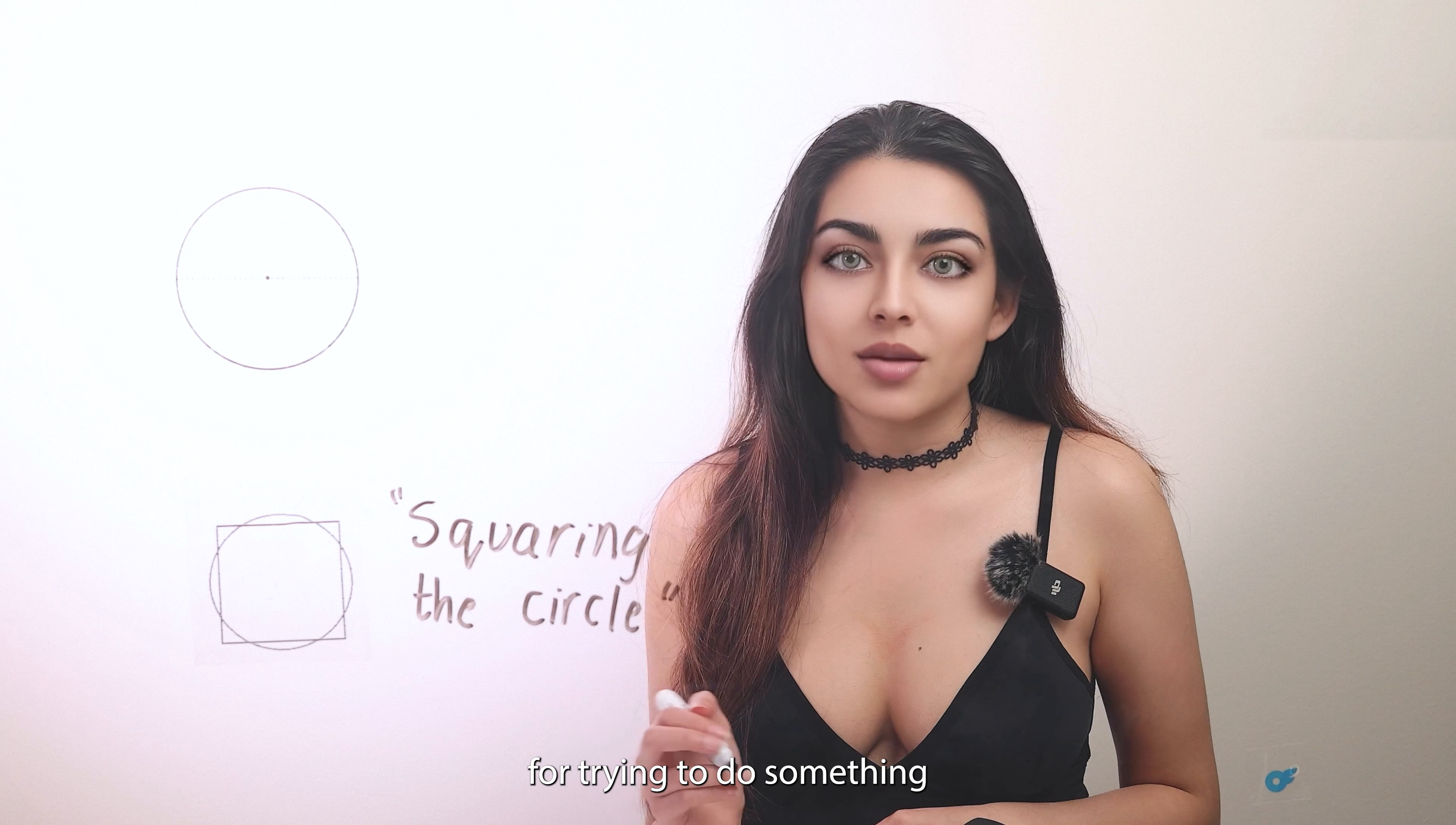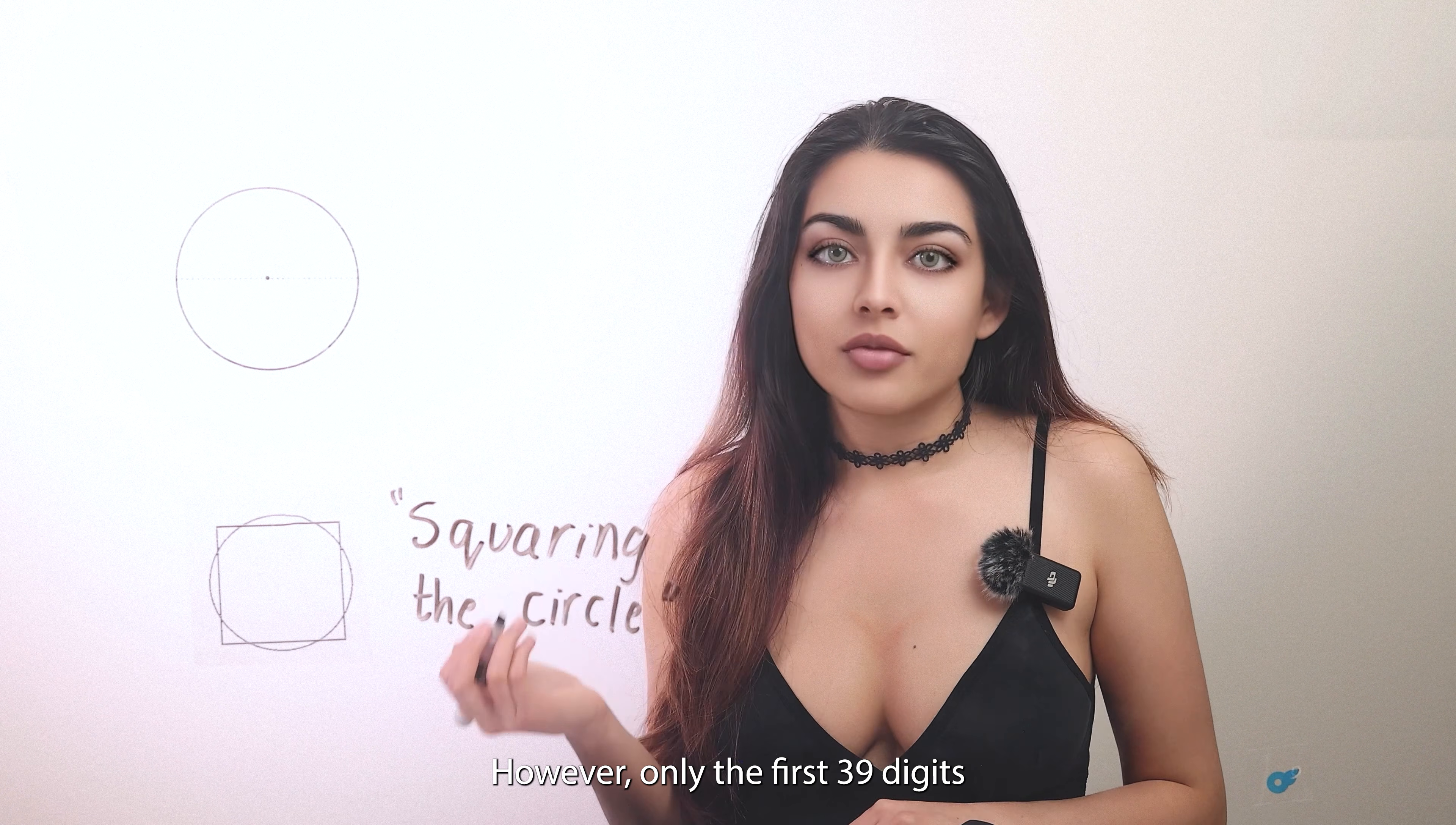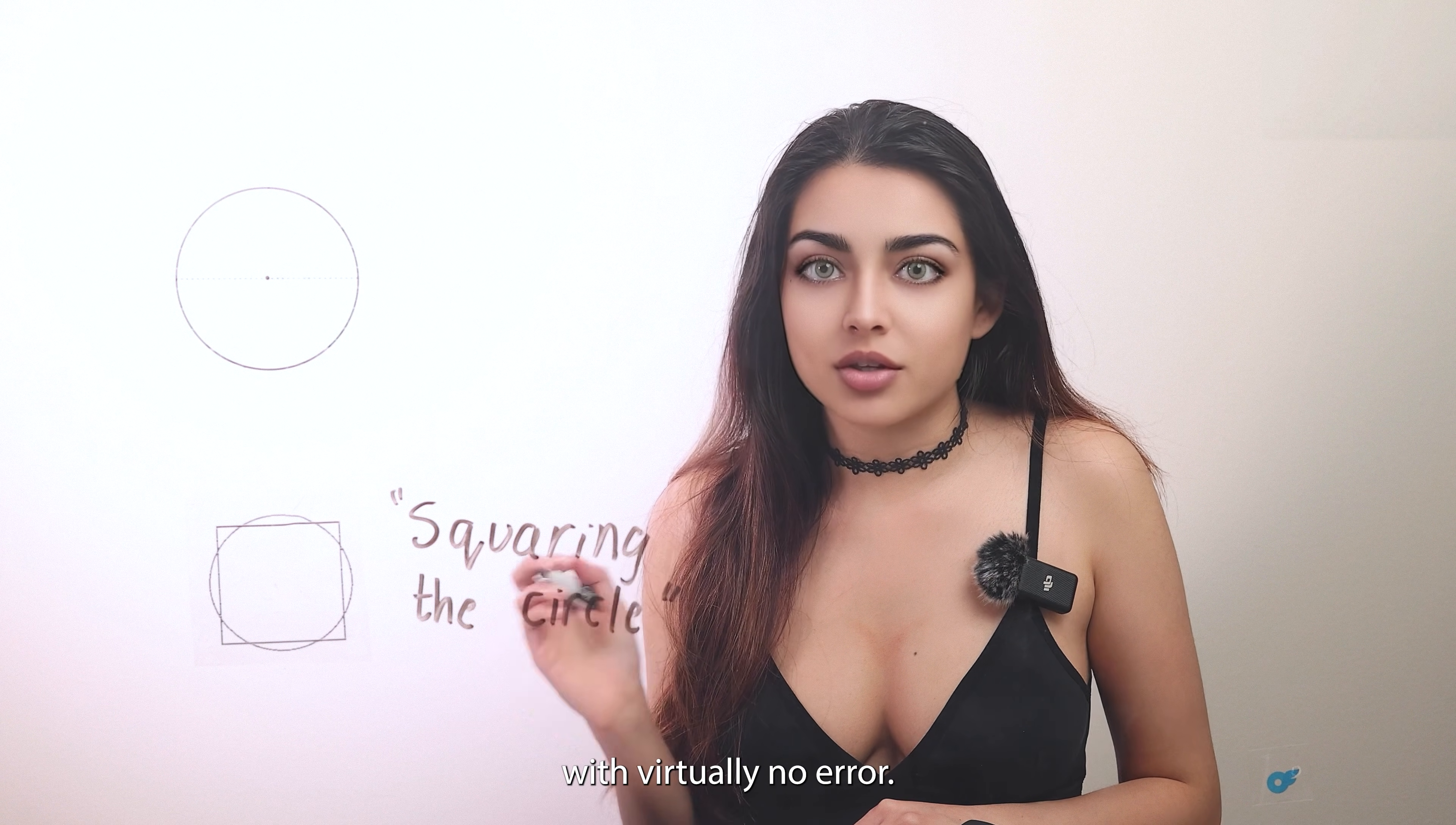With modern technological advancements, pi has now been calculated to 31 trillion digits. However, only the first 39 digits or so are needed to be able to perform all calculations in our observable universe with virtually no error.